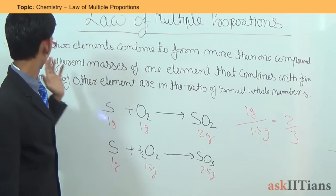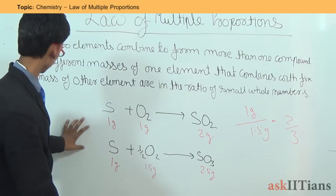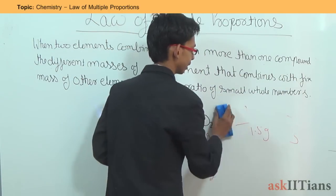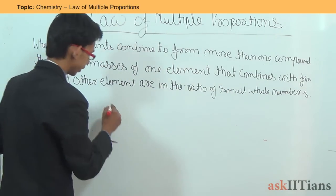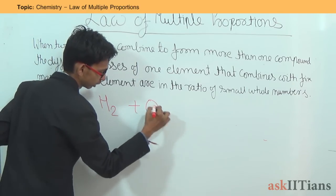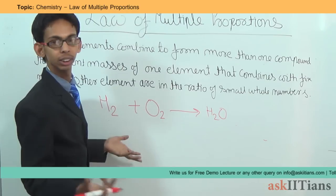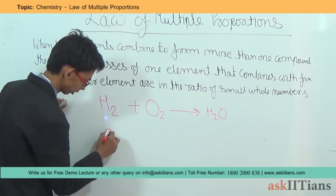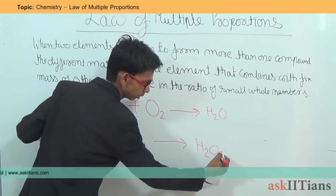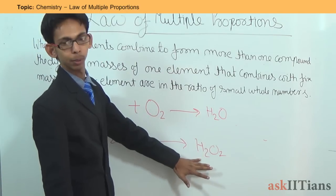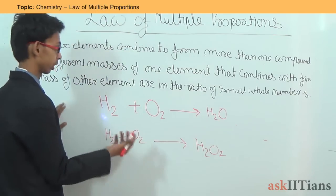The law of multiple proportions states that when two elements combine to form more than one compound, the different masses of one element combining with the fixed mass of the other are in the ratio of small whole numbers. Let's take another example: hydrogen and oxygen. Hydrogen combines with oxygen to form water, but also forms hydrogen peroxide (H₂O₂). These are two different compounds — water is essential for life, while hydrogen peroxide is poisonous.